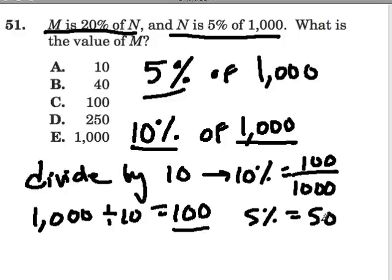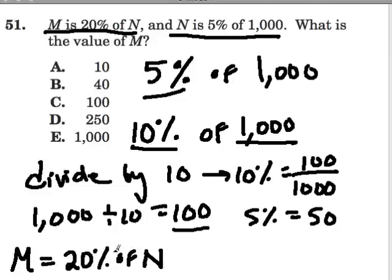We're almost there. Now we know that the letter M is 20% of N, so that means it equals 20% of N. I translated the word 'is' for equals, and here I could multiply and figure this out. But what I'm going to do is really find 20% of 50.